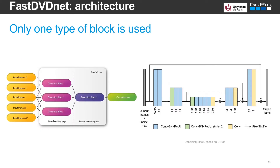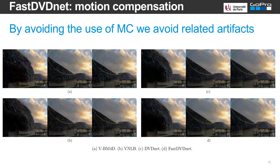We can see the architecture of our method on the left. We see five input frames in yellow, which are denoised by three denoising blocks in purple. These three blocks share weights. On the right in blue, we see the second denoising step. These two blocks share the same architecture, which is basically a modified U-Net.